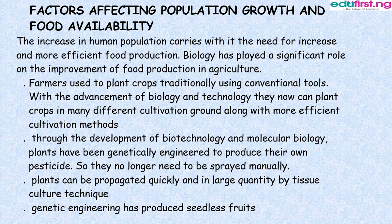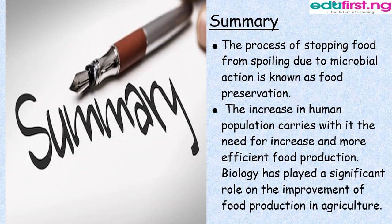Factors affecting population growth and food availability. The increased human population carries with it the need for increased and more efficient food production. Biology has played a significant role in the improvement of food production in agriculture. Farmers used to plant crops traditionally using conventional tools. With the advancement of biology and technology, they now can plant crops in many different cultivation grounds with more efficient methods. Through biotechnology and molecular biology, plants have been genetically engineered to produce their own pesticides. Plants can also be propagated quickly in large quantities by tissue culture technique, and genetic engineering has produced seedless fruits.